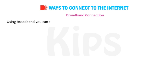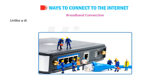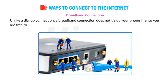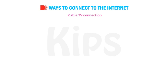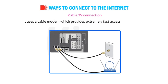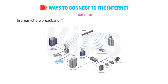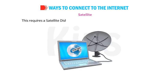Using broadband, you can share videos, download music, programs or photos within no time. Unlike a dial-up connection, a broadband connection does not tie up your phone line, so you are free to make and receive calls while online. Cable TV Connection is provided through cable TV lines and uses a cable modem, which provides extremely fast access to the Internet. In areas where broadband is not yet available, satellite connections are used, which require a satellite dish to be installed.